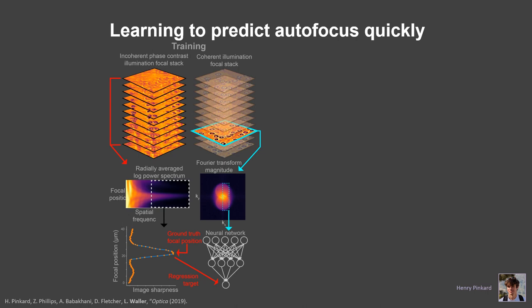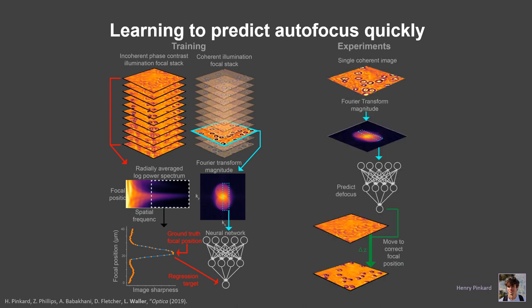In this case, what we're learning is the focus position. There's a neural network trained on the Fourier space information from an off-axis coherent image to be able to learn what the focus step is and move that microscope into focus in real time.